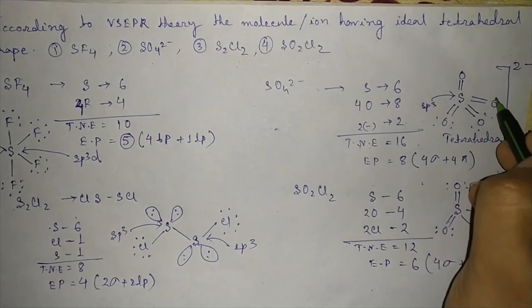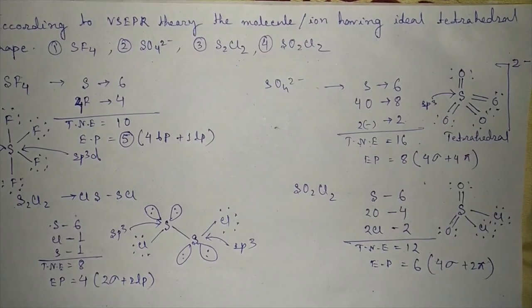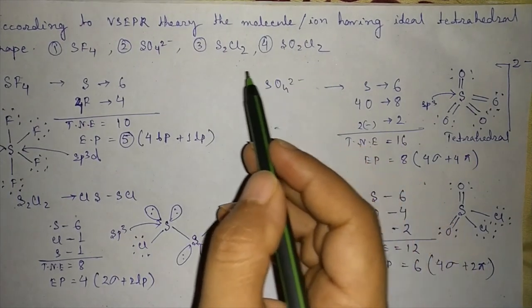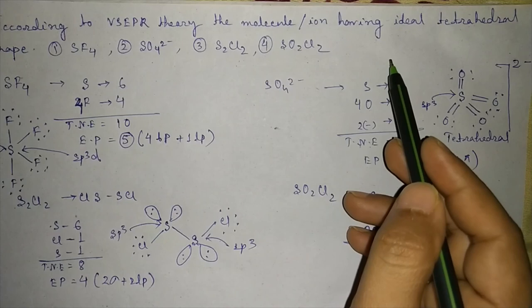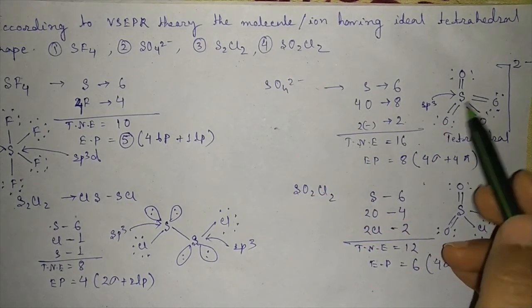Here the oxygens will have 2 lone pairs each. So our question is which molecule has ideal tetrahedral geometry? So the answer will be SO4^2-.